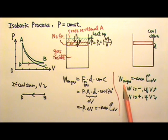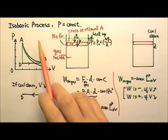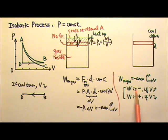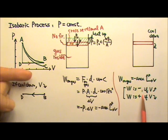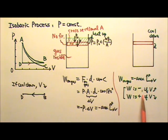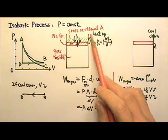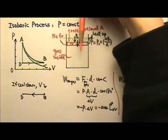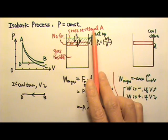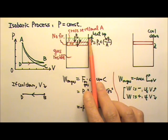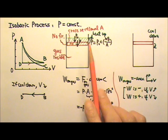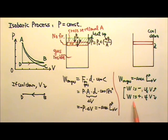The work done on the gas is the negative area of the P-V diagram is true for any processes, not just the isobaric process. The work is negative if the graph goes to the right with increasing volume. Because when the gas expands, the force on the gas goes down when the displacement goes up. They are in opposite directions, so the work then is negative.